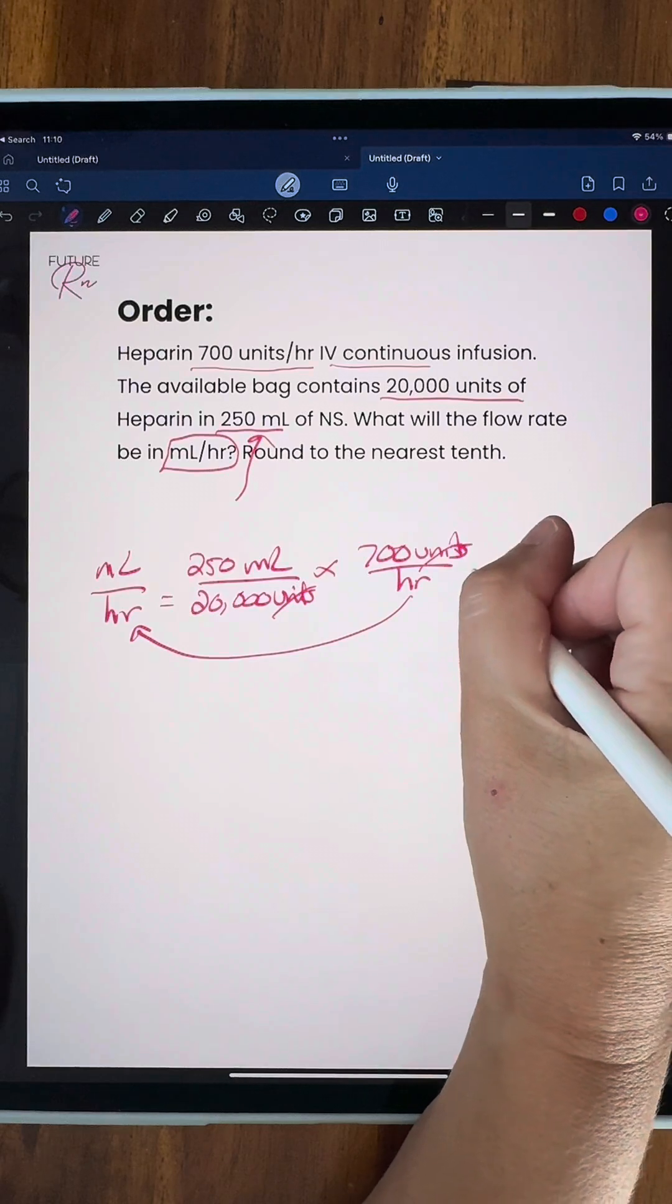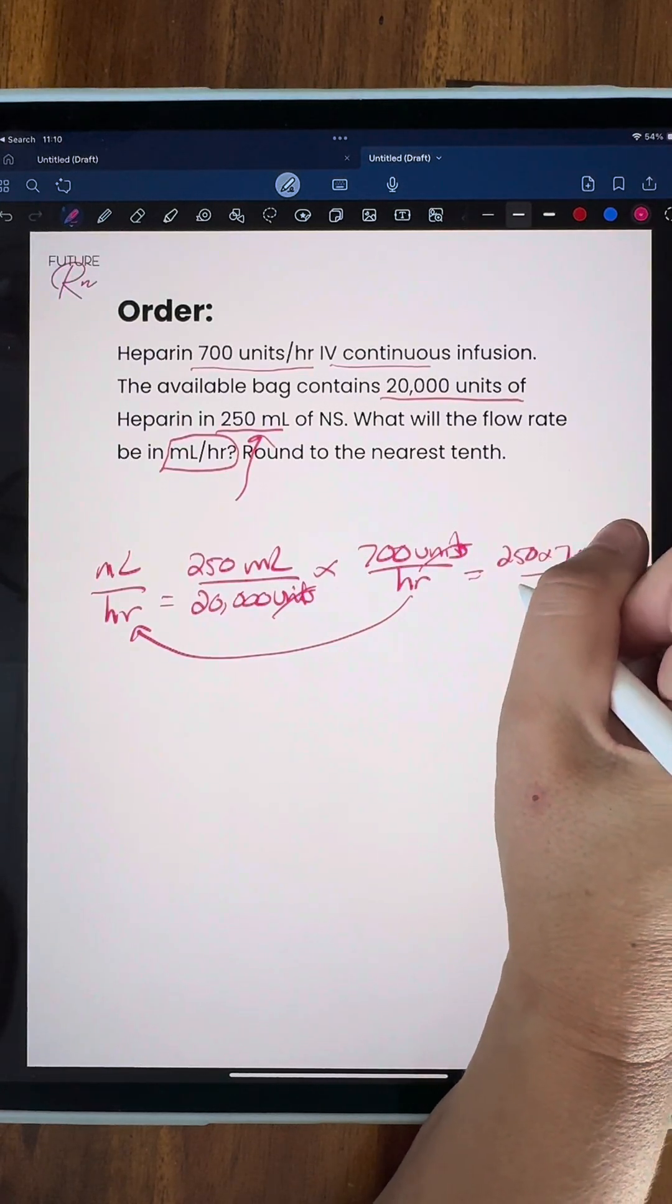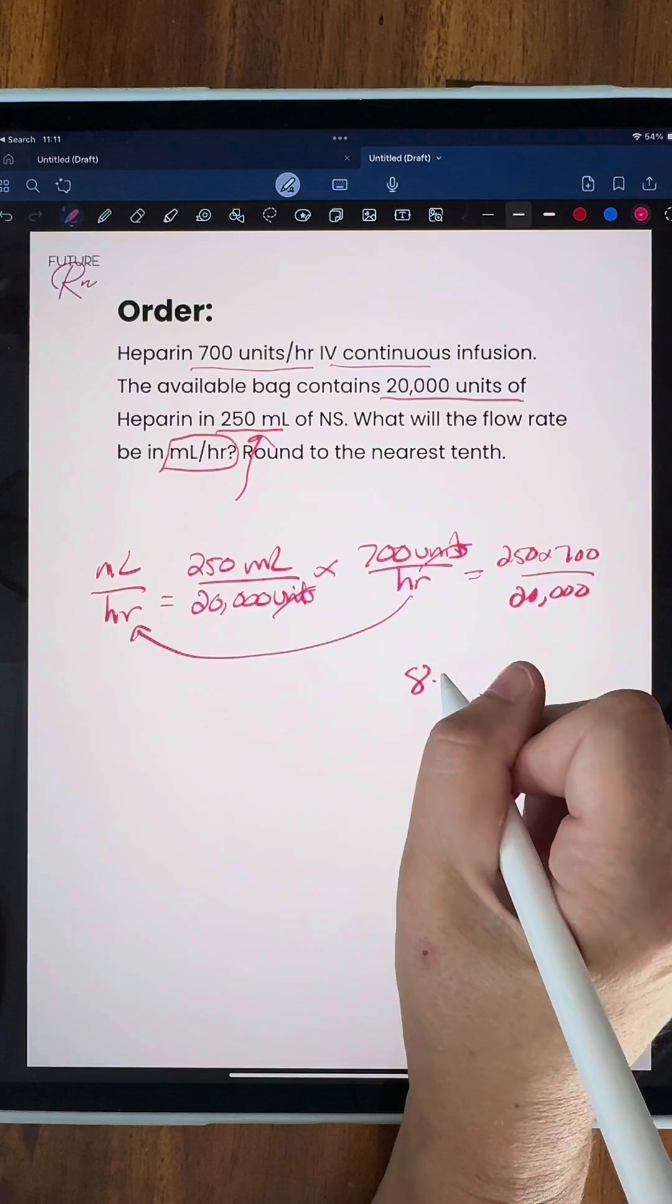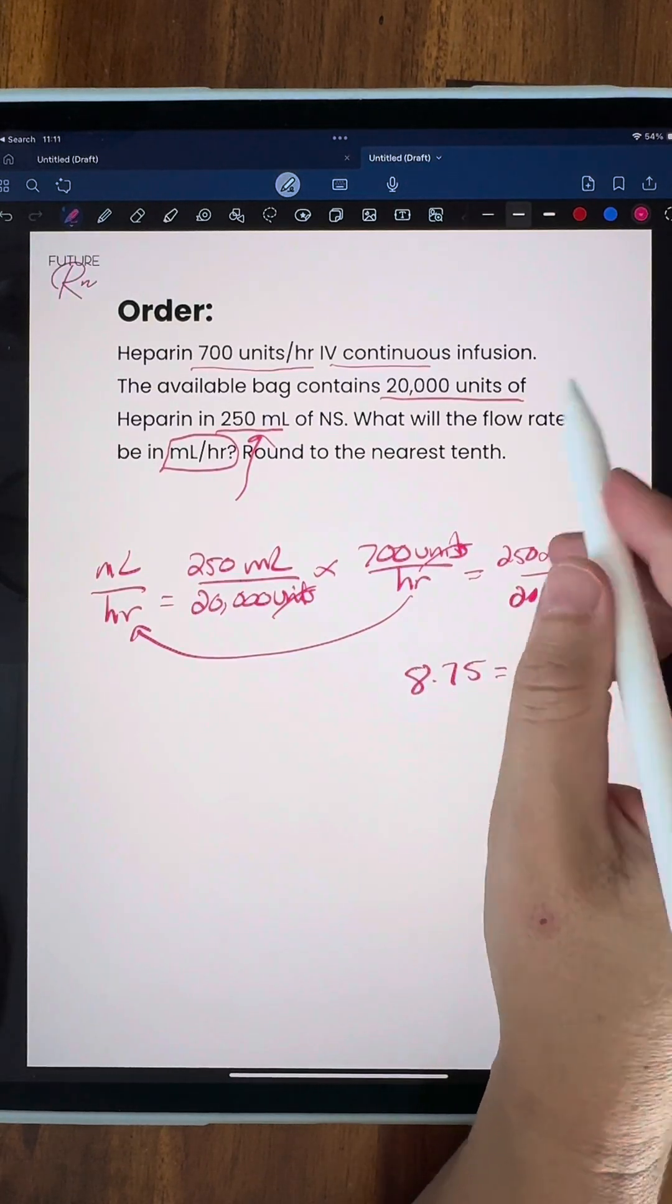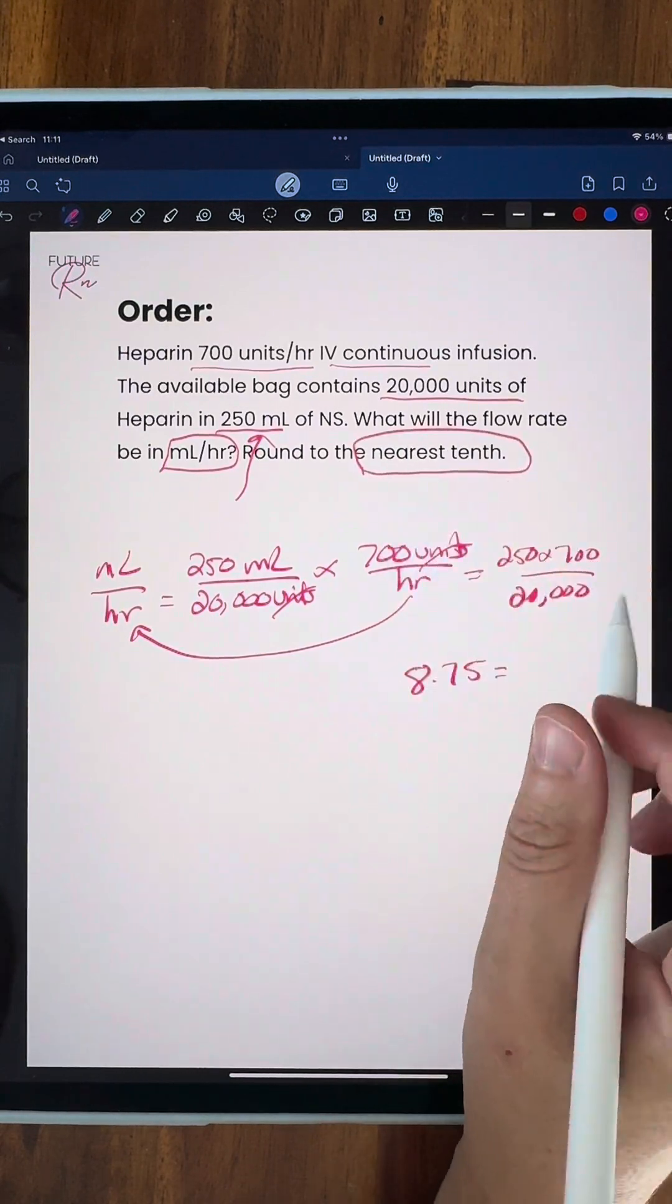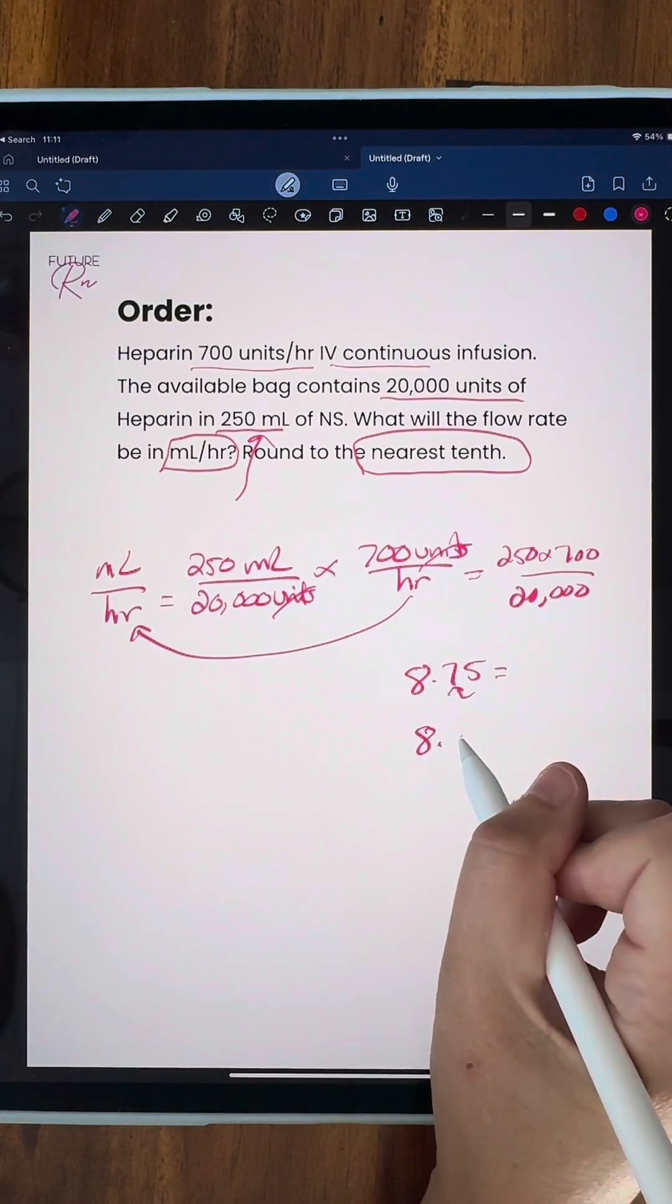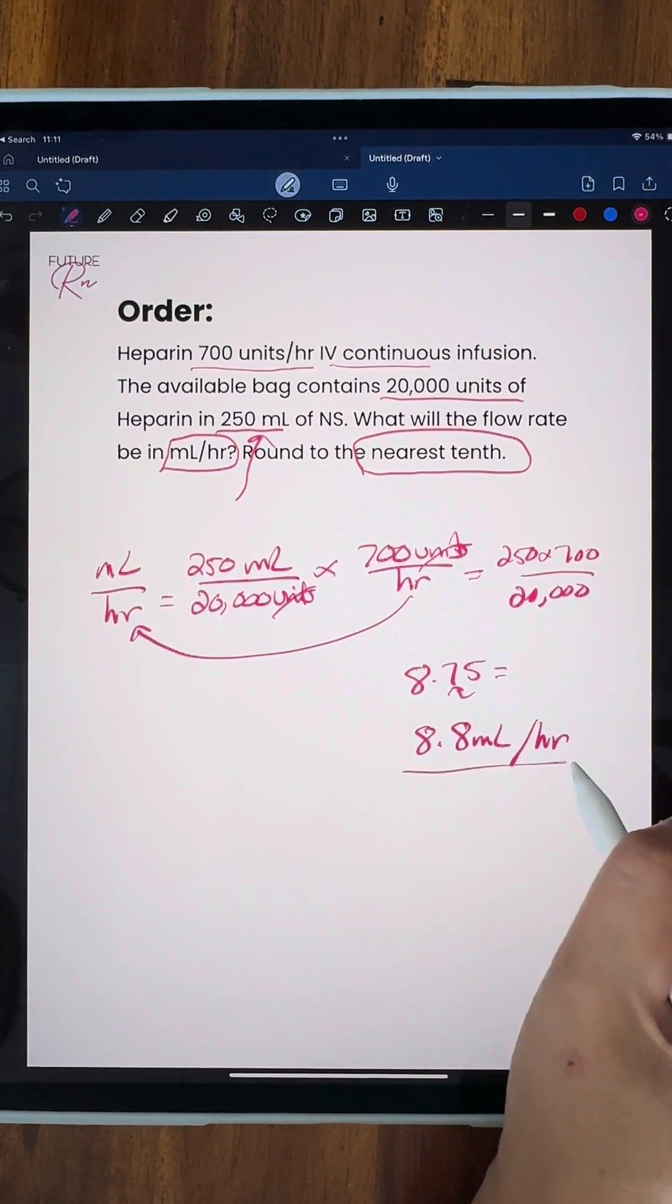We're going to cross off these units. We're going to multiply and divide, which I already did. We're going to come out with 8.75. And then you always want to look at what you're rounding to. And I have nearest tenth right here. So we're going to go ahead and round up because we have a five. We're going to round that up and we have 8.8 milliliters per hour as our final rate.